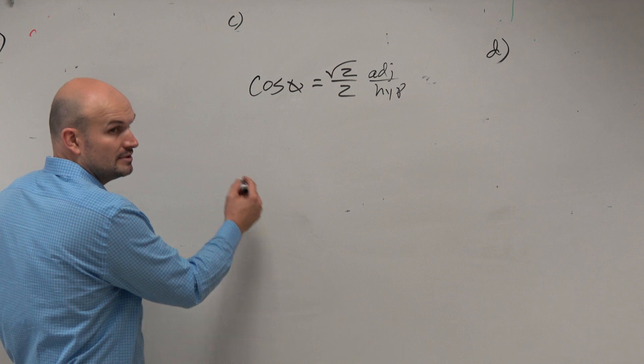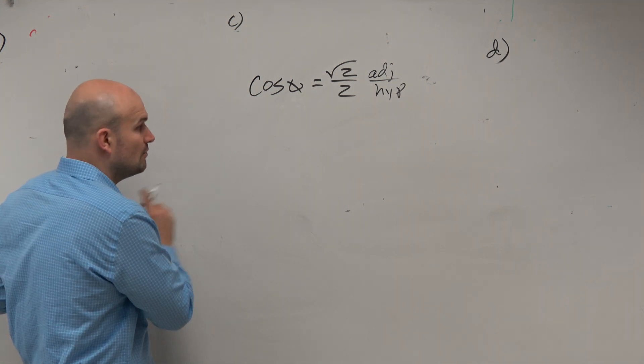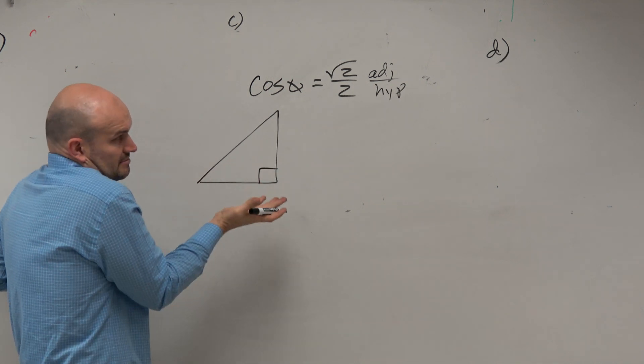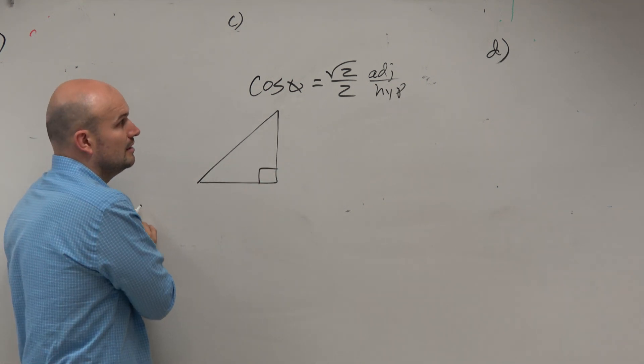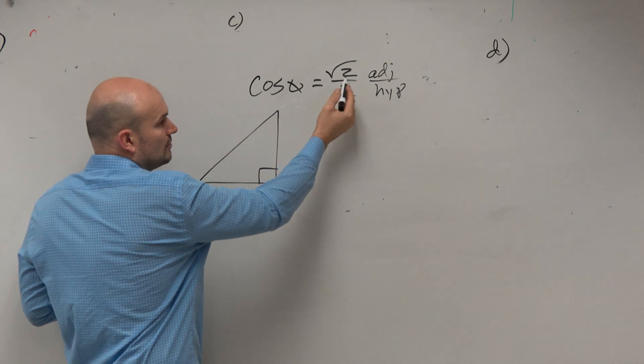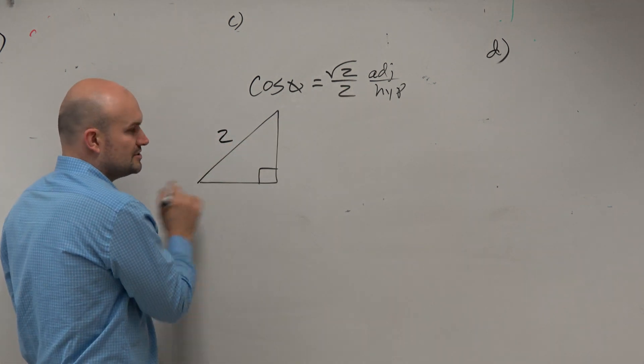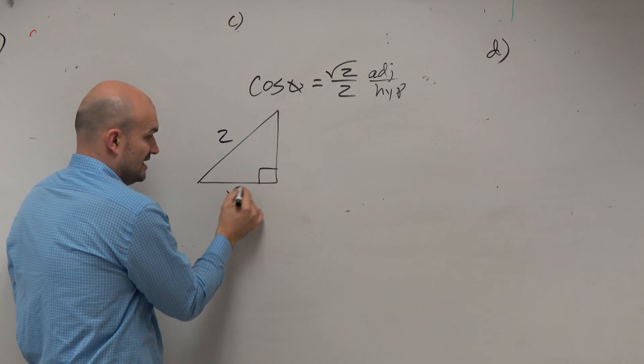Agree? Agree. So, yeah? Does it not matter where theta is? Well, let's look at it. Because let's just draw a random triangle, because we don't know what the triangle looks like. We know this is the adjacent side. Well, where's the adjacent side? Well, we know hypotenuse has to be here. So where's the adjacent side? Is it here?